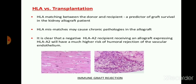A mismatch can cause chronic pathology in the allograft. During transplantation, our body can recognize the foreign organ which is grafted in the body due to HLA and MHC molecules. These MHC and HLA molecules are responsible for the recognition of foreign material, and due to this mismatched grafting it leads to chronic pathology. It is clear that a negative HLA-A2 recipient receiving an allograft expressing HLA-A2 will have a much higher risk of humoral rejection of the vascular endothelium. Therefore, during transplantation we have to match these MHC and HLA molecules, as they stimulate the adaptive immune system to attack the grafted organ.